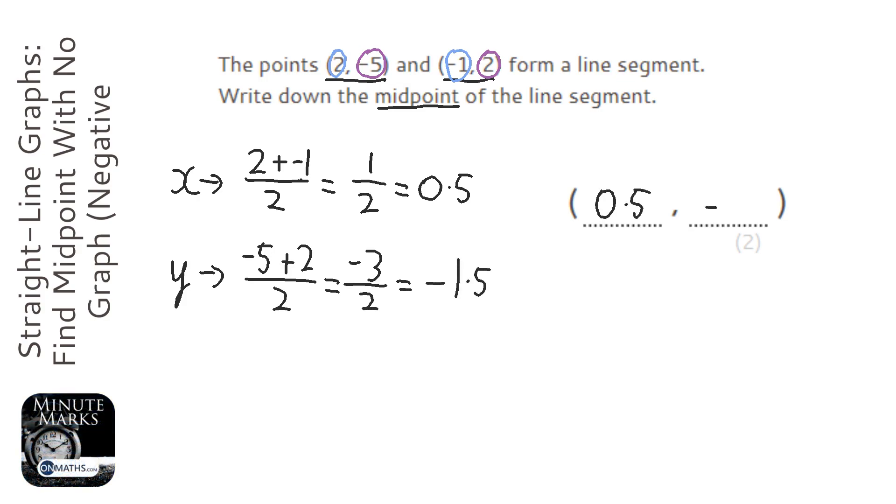If you think about it, a half is halfway between 2 and -1, so that makes sense, and -1.5 is halfway between -5 and 2.